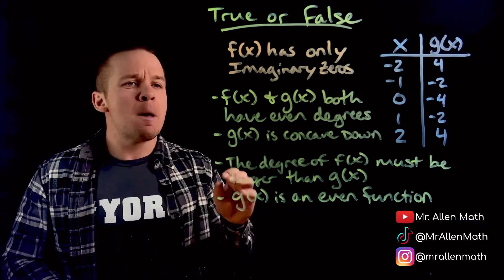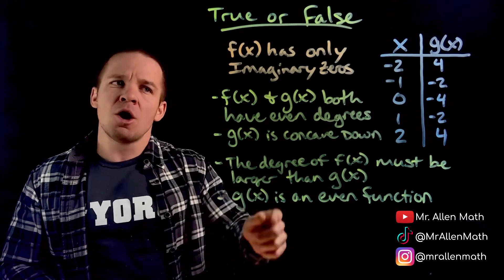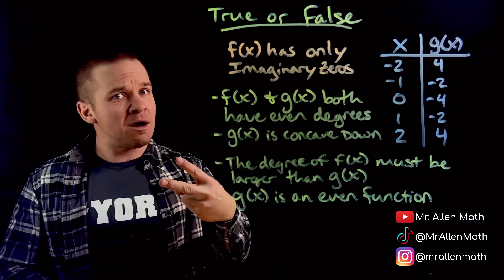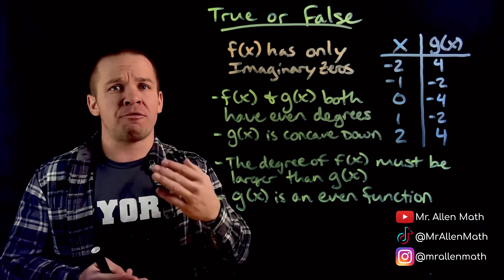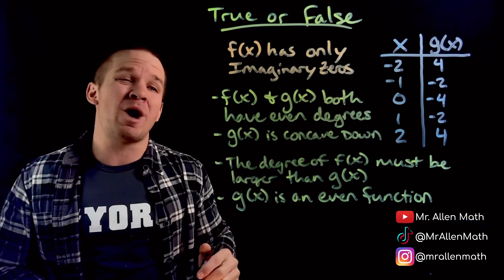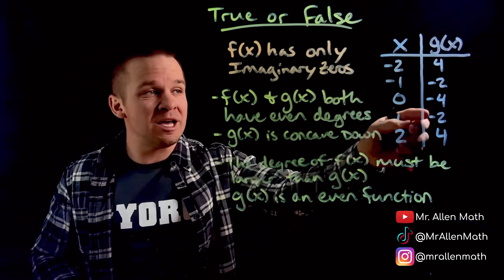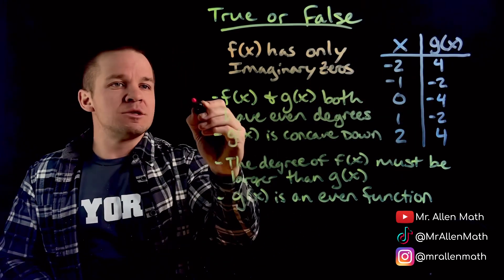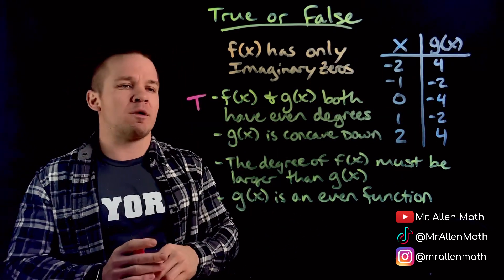f of x and g of x both have even degrees. Well, since imaginary zeros always come in pairs, we're either dealing with like a degree of 2, a 4, a 6, whatever. So that's definitely even. We already said that's going to be a quadratic over there due to the nature of our output values. So we have a true for this bad boy right here.